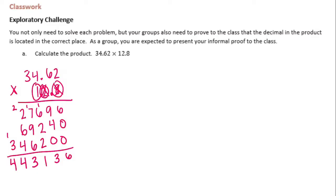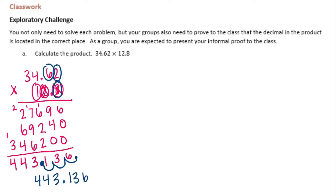Now we need to figure out where the decimal point goes. In the problem, there were one, two, three digits behind the decimal point. So in my answer, I need to move it one, two, three places to the left. I get four hundred forty-three and one hundred thirty-six thousandths.